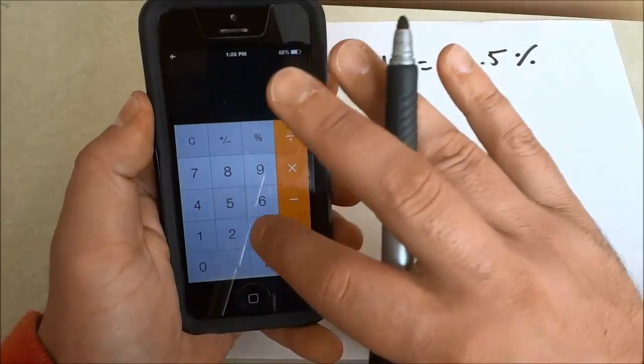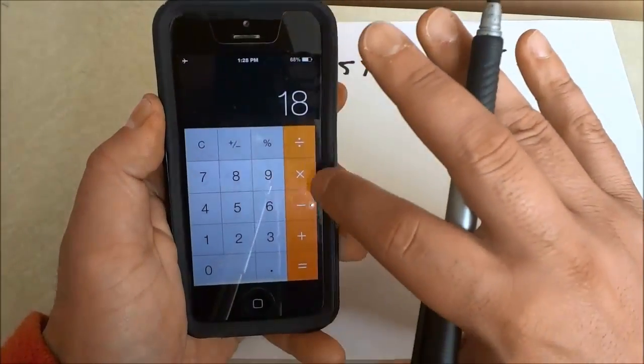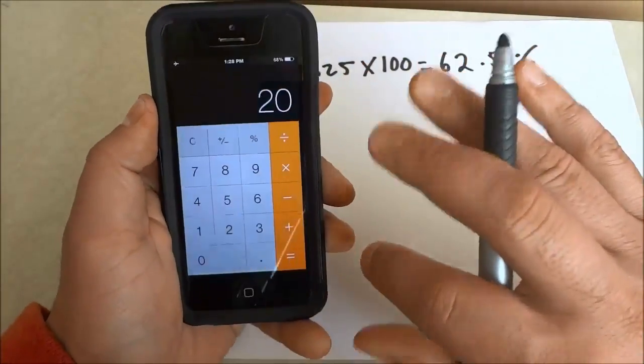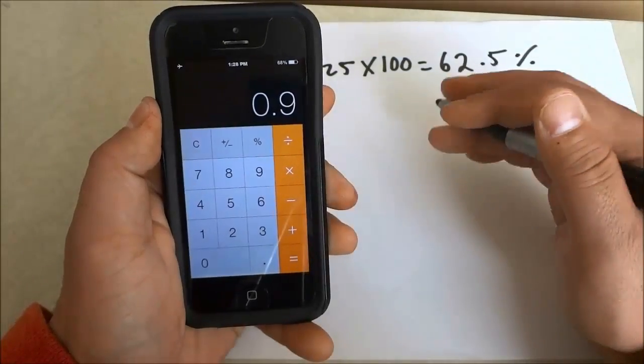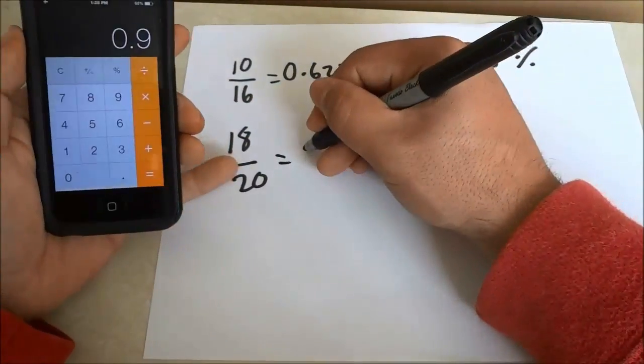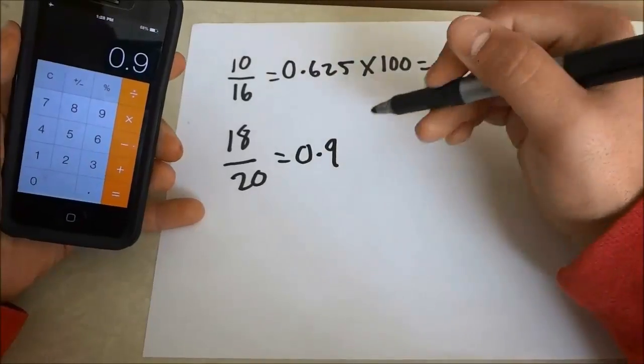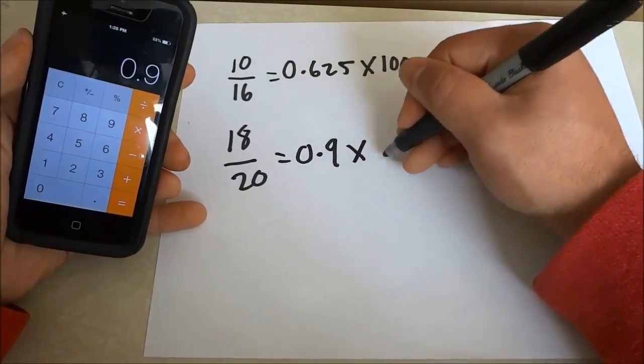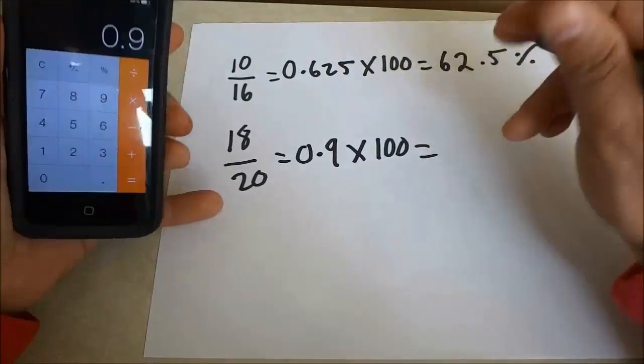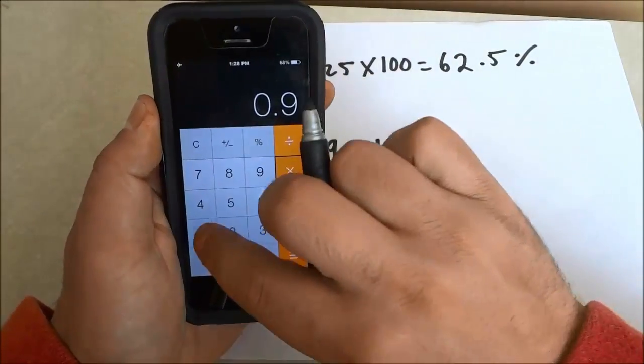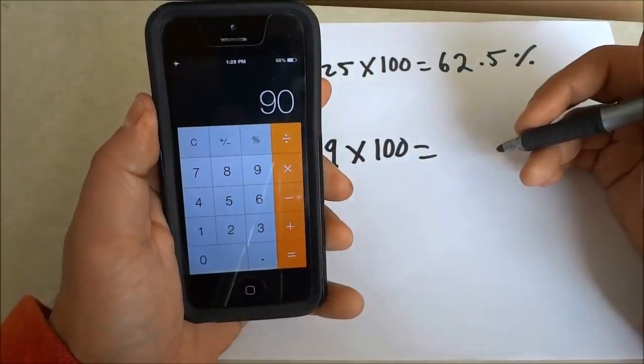So 18, oops, sorry, 18 divided by 20. And I'm going to find out what the answer is and it is 0.9. So 0.9. Now I'm going to take this answer and multiply it by 100. So 0.9 times 100 is equal to 90.